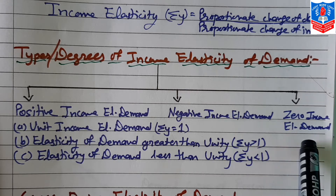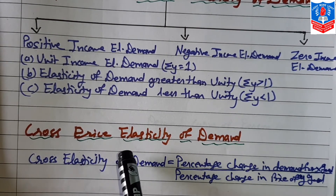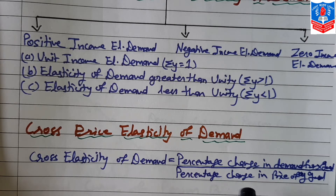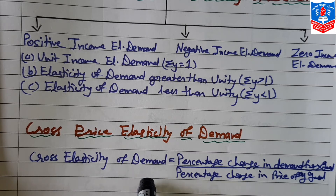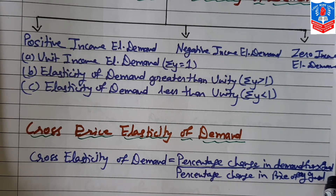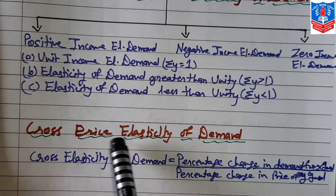Now, cross price elasticity of demand. When the demand for a concerned commodity changes in response to a change in the price of its related goods — meaning complementary or substitute goods — the extent of such change in demand is known as cross elasticity of demand. The formula is: percentage change in demand for commodity X upon percentage change in price of commodity Y.